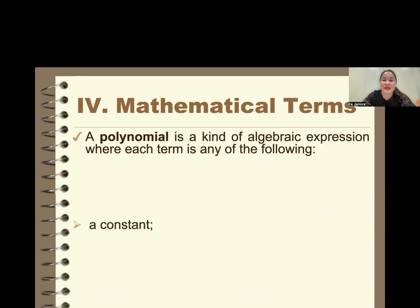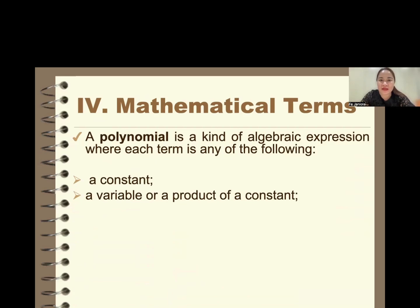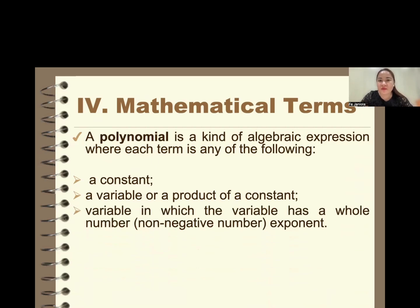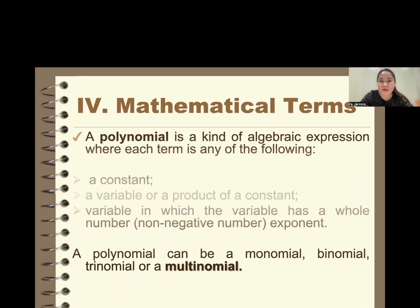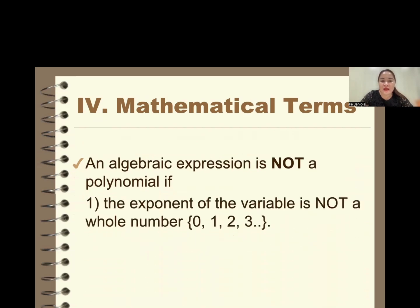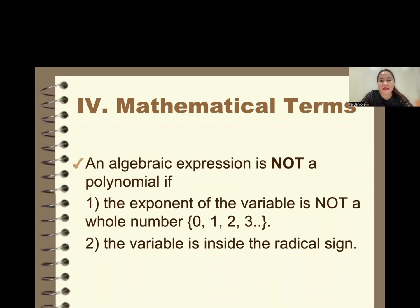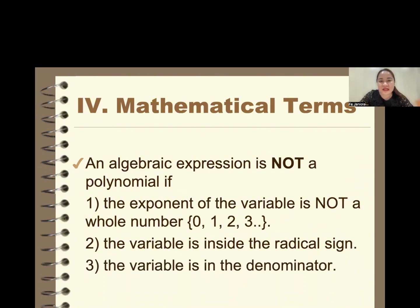A polynomial is a kind of algebraic expression where each term is a constant, a variable, or a product of a constant and a variable with a non-negative exponent. An expression is not a polynomial if the exponent is not a whole number — for example, the square root of x is x to the power of one half, which is not a whole number exponent. Also, 1 over x equals x to the power of negative 1, so it is not a polynomial. A polynomial must have whole number exponents.